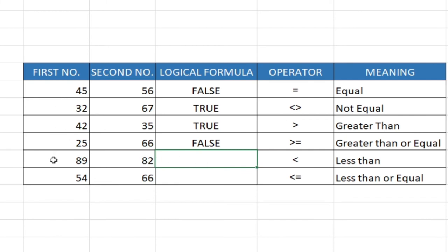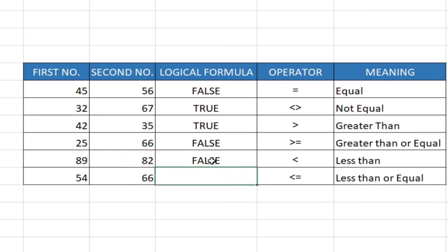We want to compare if the first number is less than the second number. Bring equals sign, select the first number, bring the less than symbol, select the second number, and hit Enter. It's saying false, meaning 89 is not less than 82 — 89 is actually greater than 82, that's why it's saying false.